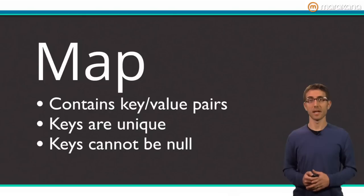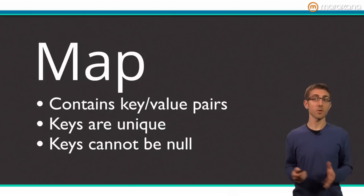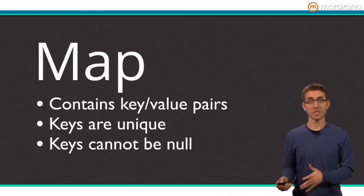Finally, let's look at the map class. Maps, known as dictionaries or hash maps in other languages, contain key value pairs. Maps associate keys to objects for easy retrieval. They're great for fast access to arbitrary objects if you know the key. Keys must be unique and cannot be null.